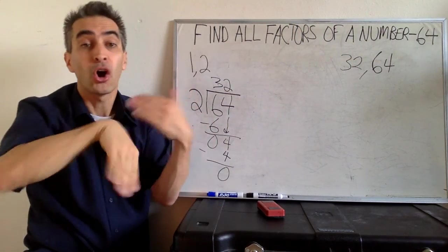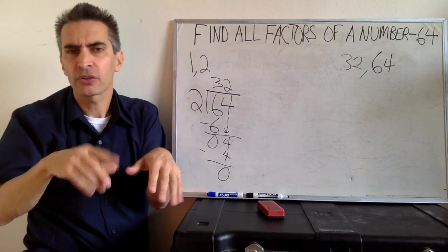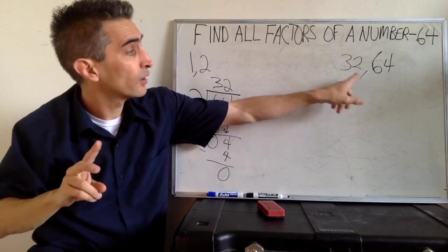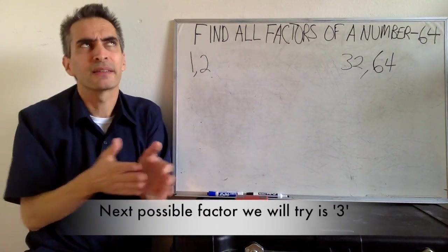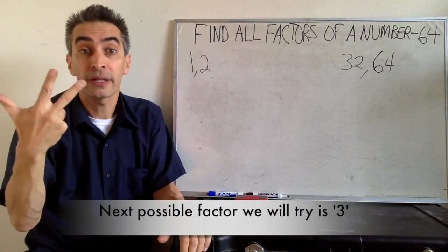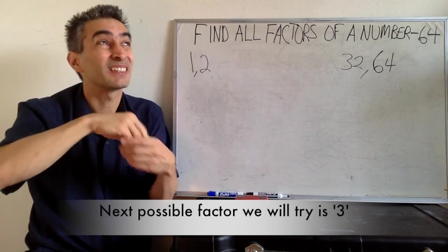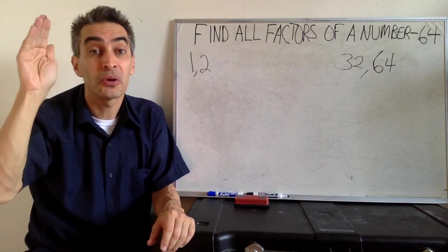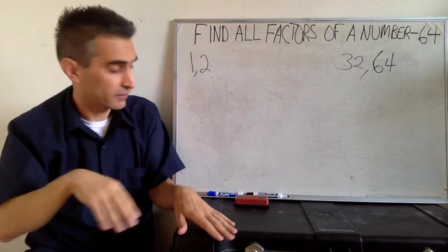Notice that all the other factors are found where? Well, they're found between the 2 and the 32. Next, let's try 3. Let's see. 3 into 64. Let's think about this. I don't know. Well, we can divide.